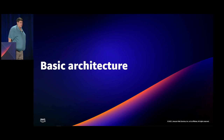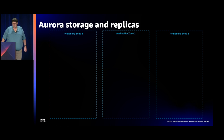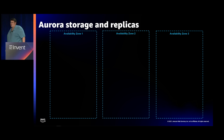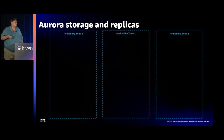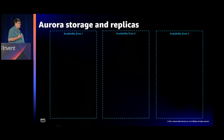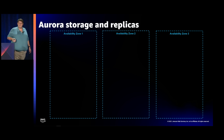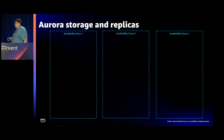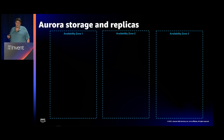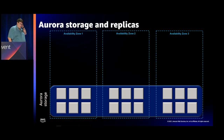Let's dig into the architecture a bit — this is a deep dive talk, so we'll go deep especially on the storage tier. Aurora always runs in three availability zones; we're always spread across those three AZs for our storage tier. You don't have to have three AZs for the server side, but storage will always be spread across those three AZs.